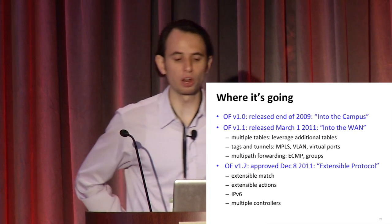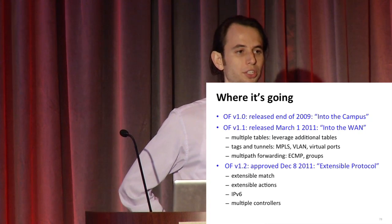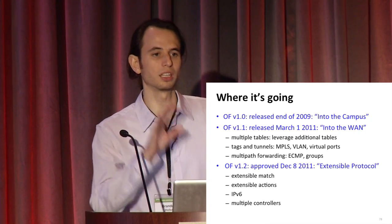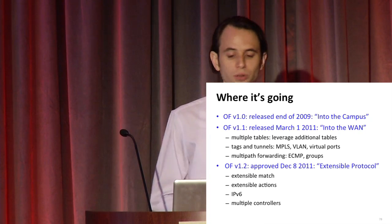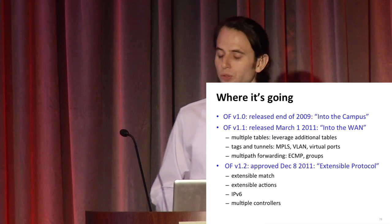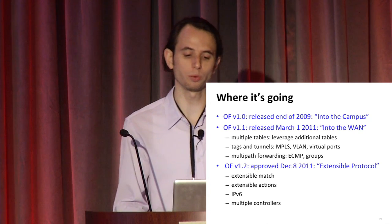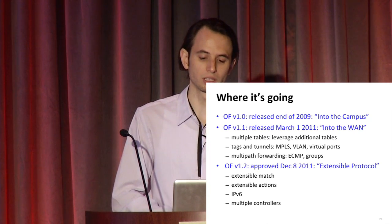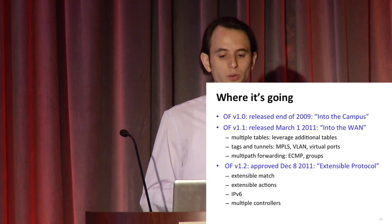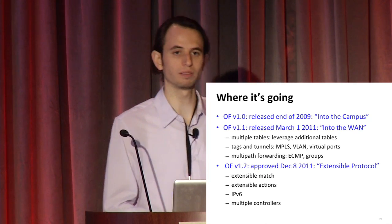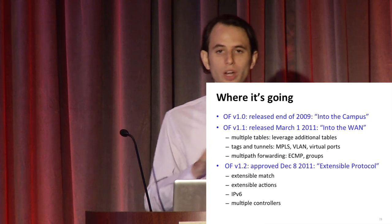OpenFlow 1.0 was released at the end of 2009, targeted at the campus - making it usable for researchers and especially for the GENI project, a large collection of campus resources for networking experiments. OpenFlow 1.1 was released March 1, 2011. It was implemented in software and hasn't been implemented in hardware yet to my knowledge, though it is capable of being implemented in hardware. This is the into-the-WAN OpenFlow version, and there are three major changes that help in the WAN. First is multiple table support, eliminating that cross-product problem of layer 2, layer 3, and access control.